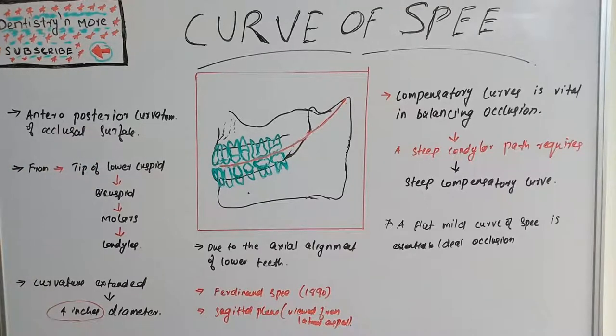Curve of Spee is a compensatory curve in balancing occlusion, put forward by anatomist Ferdinand Spee in 1890. It's an anterior-posterior curve in a sagittal plane and is viewed best from the lateral side. So let's see what is Curve of Spee.